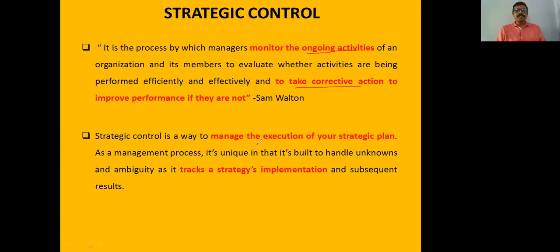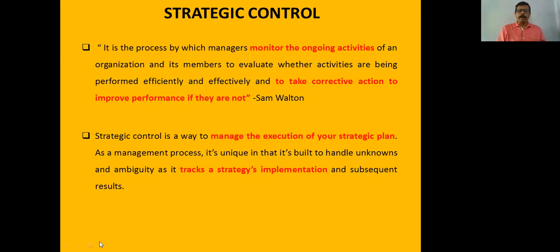Strategic control is always linked to the strategic evaluation phase. It is performed after the strategy is executed and it tracks the strategic implementation phase completely. It first sets the standards, then checks whether the existing performance is good or bad, and identifies deviations — the difference between actual and standard. If the deviations are high, necessary action is taken; if the deviations are low, no further strategic action is needed.